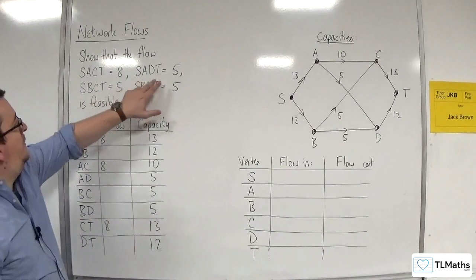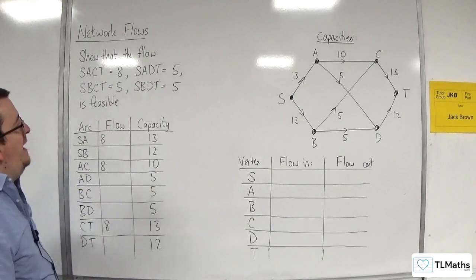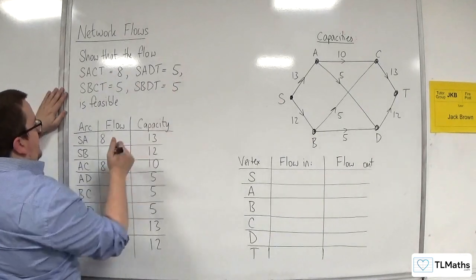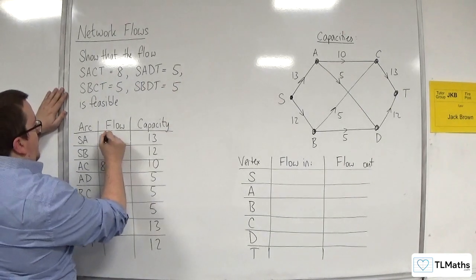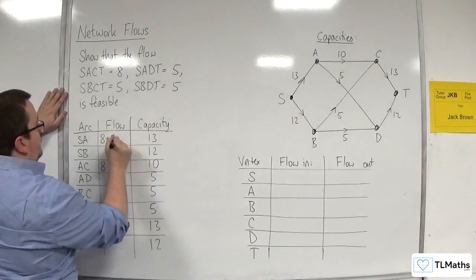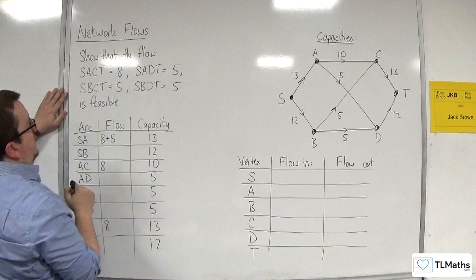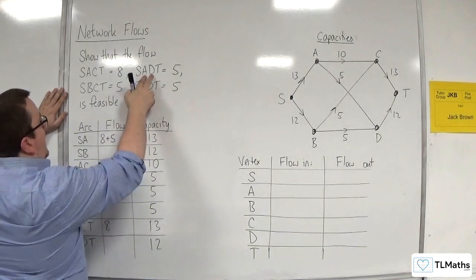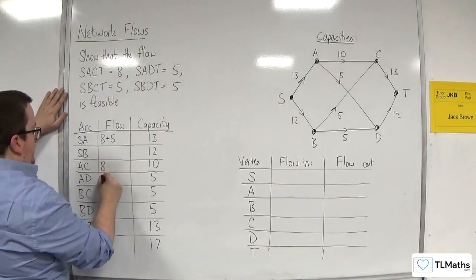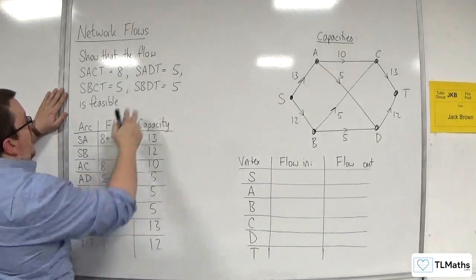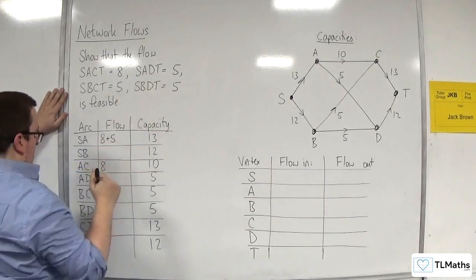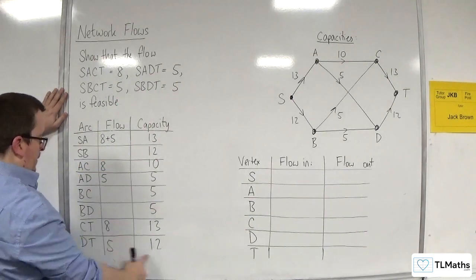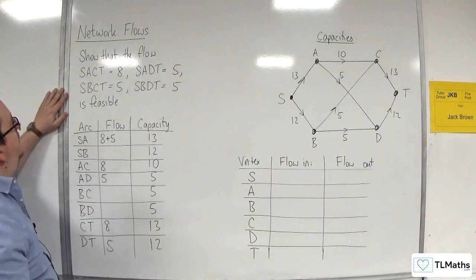SADT equals 5, so SA needs another 5 — that's fine, bringing us to 13. Then we've got AD, which will have 5, and DT will have 5 as well. They're fine with their capacities.